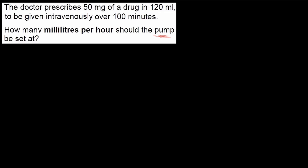Diving straight in: question one — the doctor prescribes 50 milligrams of a drug in 120 millilitres to be given intravenously over 100 minutes. How many millilitres per hour should the pump be set at? The clue here is the word 'pump' — it tells us it's an infusion, and we have a formula: rate equals volume over time.